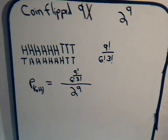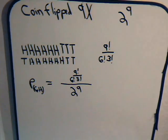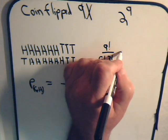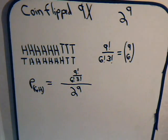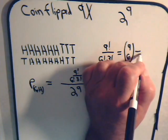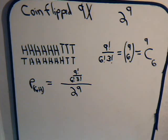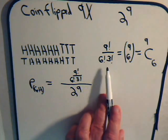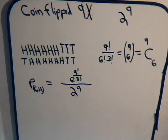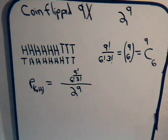You might notice that this expression — 9!/(6!·3!) — is also equal to the binomial coefficient C(9,6), which is also a combination type phenomenon. In the earlier videos, we discussed how permutations with repeats can be reinterpreted as combination type problems, mainly because of exactly this type of relationship.